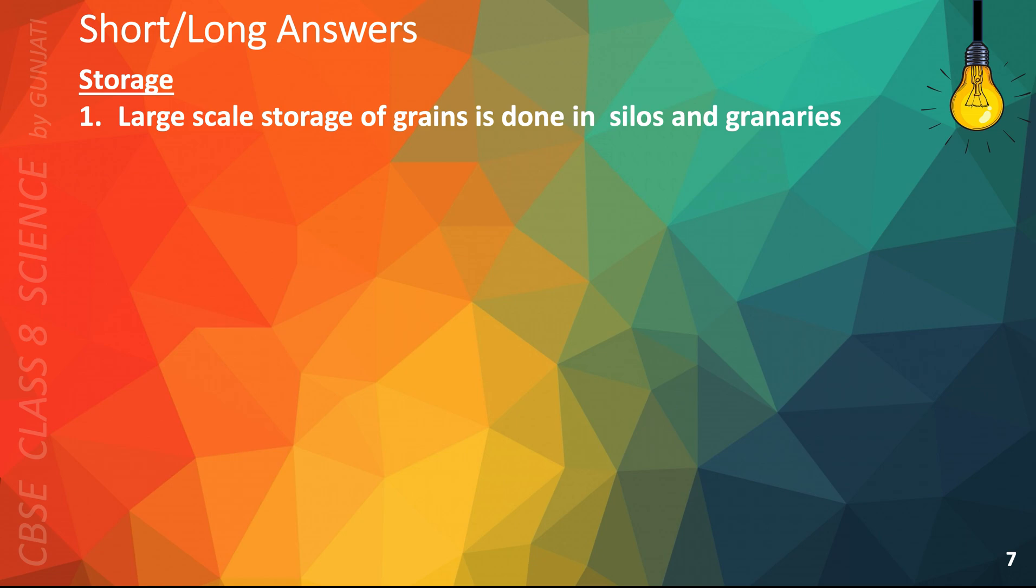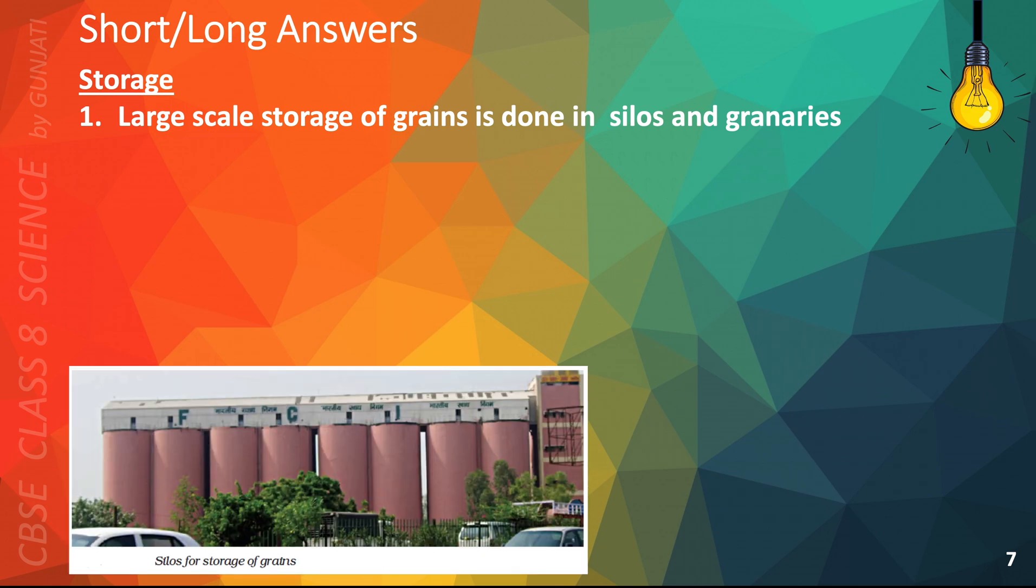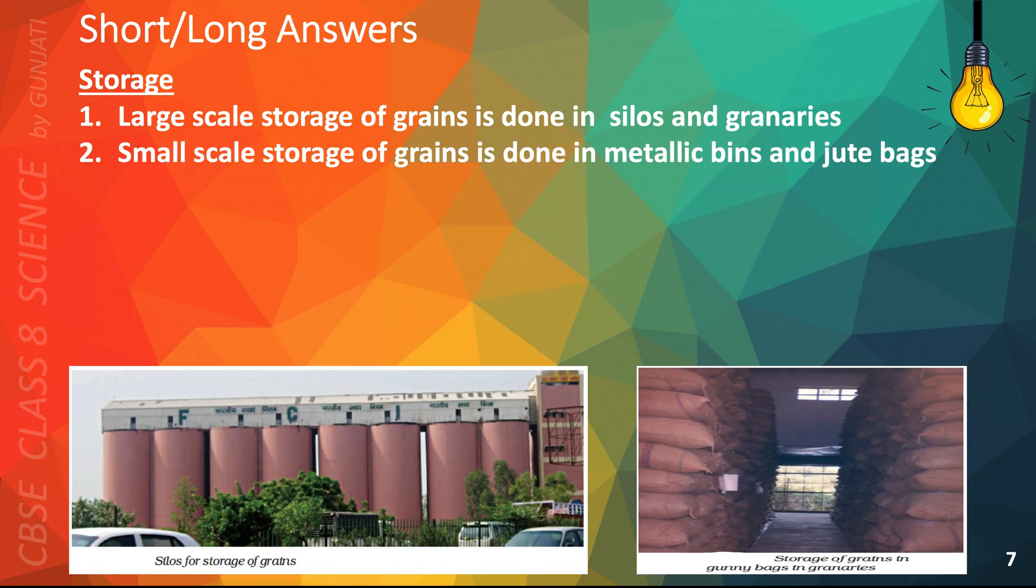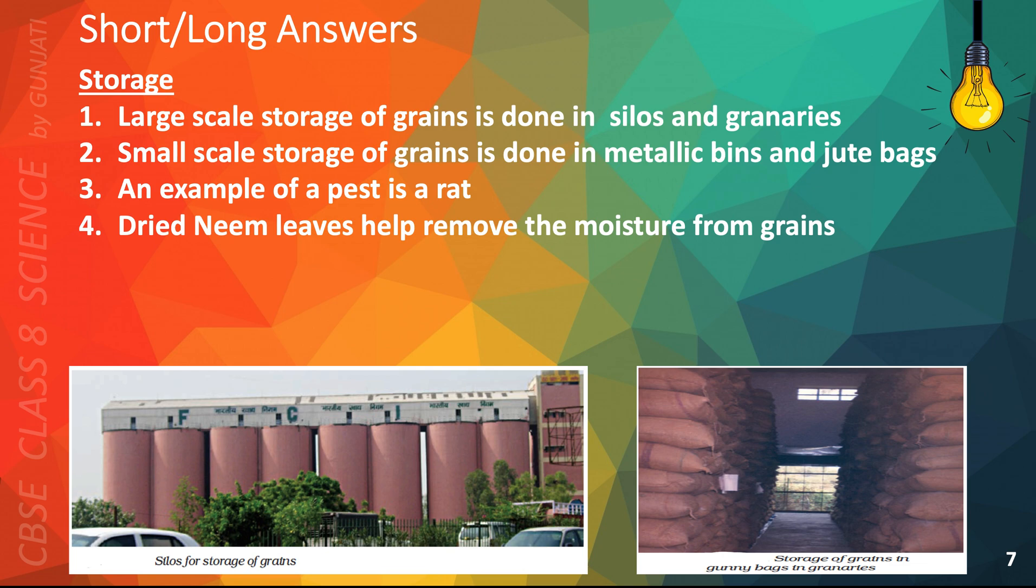Large scale storage of grains is done in silos and granaries. Small scale storage of grains is done in metallic bins and jute bags. An example of a pest is a rat. Dried neem leaves help remove the moisture from grains.